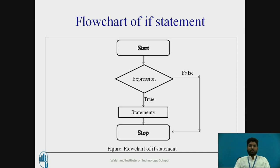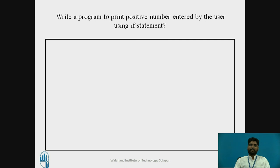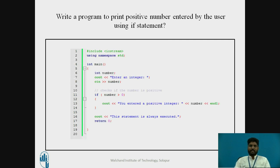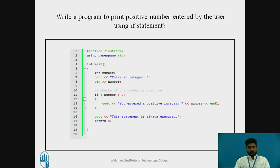We will see a small program on the if statement: write a program to print a positive number entered by the user using the if statement. I have used Code::Blocks to write the program — you can also practice this in Turbo C++. I have declared a variable number, used cout with the insertion operator to prompt 'enter integer', and stored that integer in number. The condition is: if number is greater than 0, it shows 'you have entered a positive integer' and displays the number. The last statement is always executed. Then return 0.